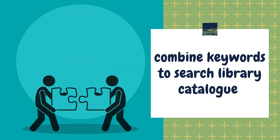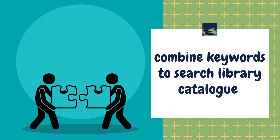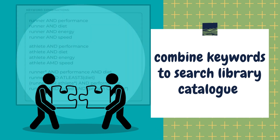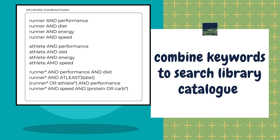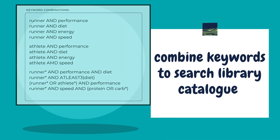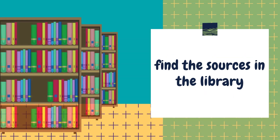Step 3: Start to search the Library Catalog using combinations of the keywords on your list. Use Boolean operators to broaden or narrow your results to find the most relevant information.